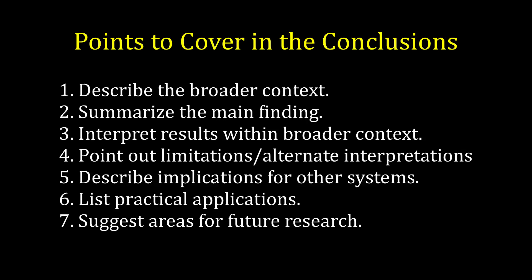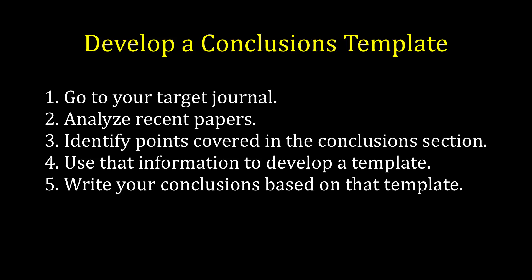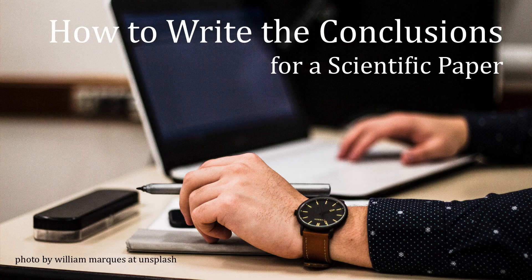If you are still uncertain about what to include in your conclusions, your target journal is a good place to begin. Analyze a few recent papers in that journal and see what points the authors cover in their conclusions. Then use that information to outline your conclusion section. Once you see how it's done, you'll be able to develop your own formula for writing a compelling and informative conclusion section. Thanks for watching, and please like my video if you found it helpful.